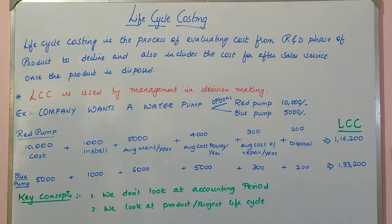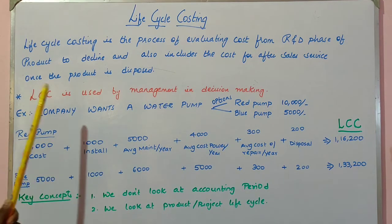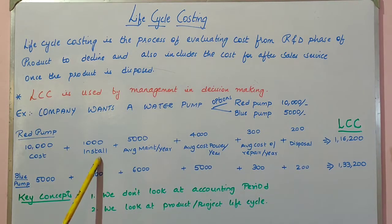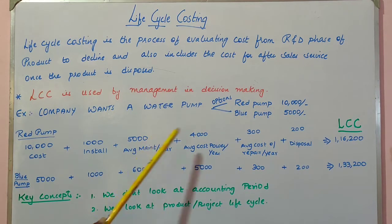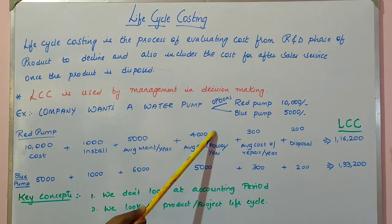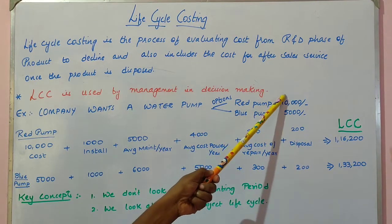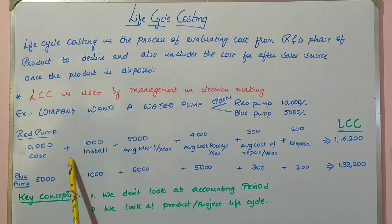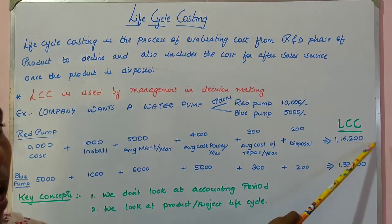The company calculates the life cycle cost. For the red pump: purchase price is 10,000; installation 1,000; maintenance 5,000 per year; power consumption 4,000 per year; repair 300; and disposal 200. With a pump life of 20 years, the life cycle cost for the red pump comes to 1,16,200.